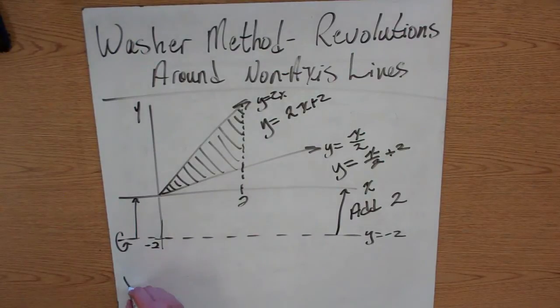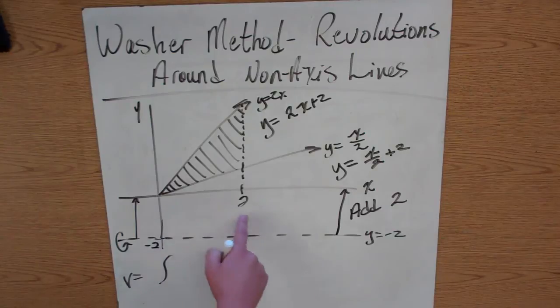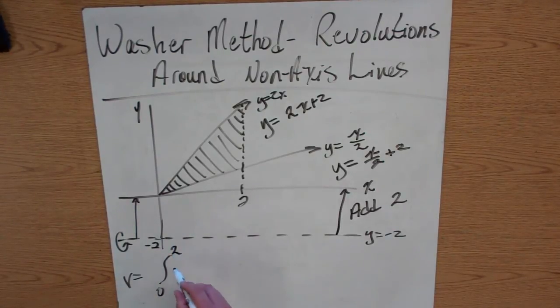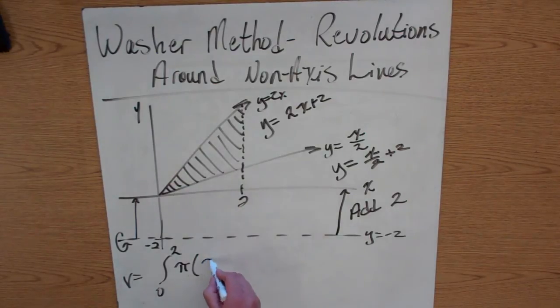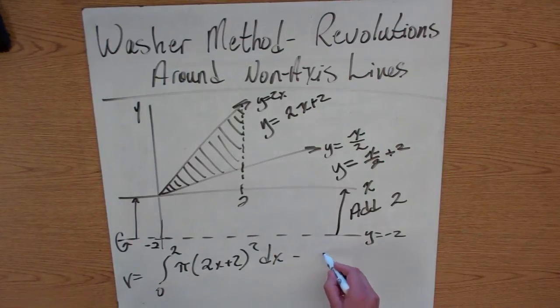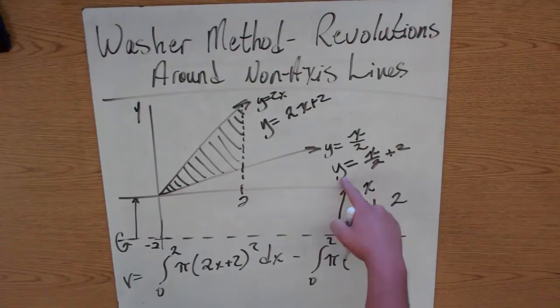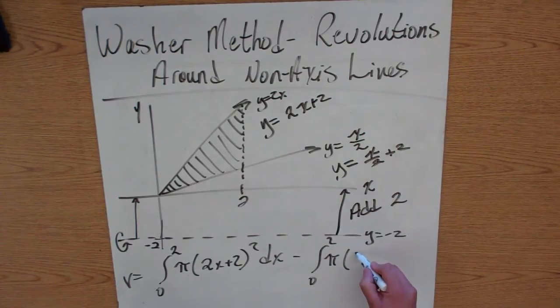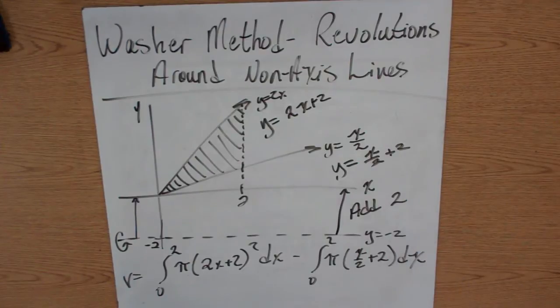So our volume is going to be pi times the one furthest away, so 2x plus 2 squared dx, and minus from 0 to 2 pi times the closest one, which is x over 2 plus 2 dx.